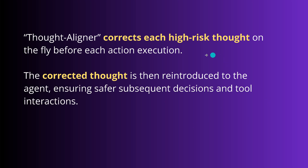So they say, we built a very simple plugin module for our agents. We call it thought aligner. And this corrects each high-risk single thought on the fly before an LLM could do an action execution. Now the corrected thought is then reintroduced back into the agent, ensuring a safer subsequent decision and tool interactions. This is a very particular countermeasure if you have an AI going on a shopping spree on the internet or whatever.